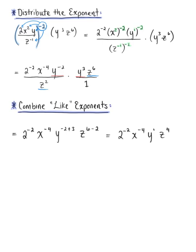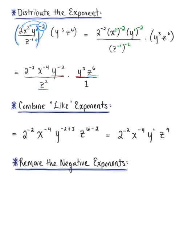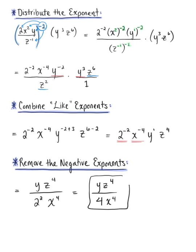Simplifying here, this is still two to the negative two, x to the minus four, y to the first power, and z to the fourth power. Last but not least, we need to remove the negative exponents. We have two negative exponents: two to the negative two and x to the minus four. So we can rewrite this as y times z to the fourth, all over two squared times x to the fourth power. And we can simplify this as y times z to the fourth, all divided by two squared — which gives us four — times x to the fourth. And this is our final answer.